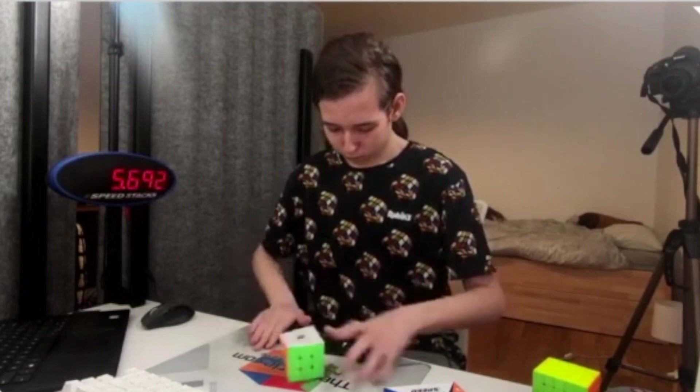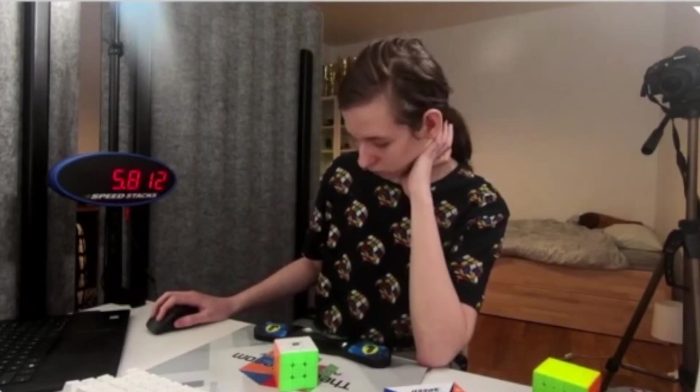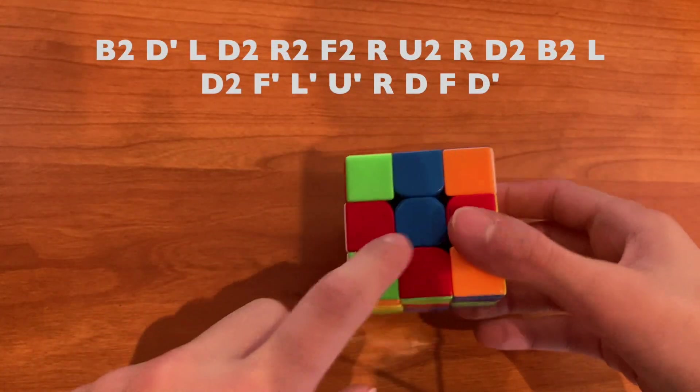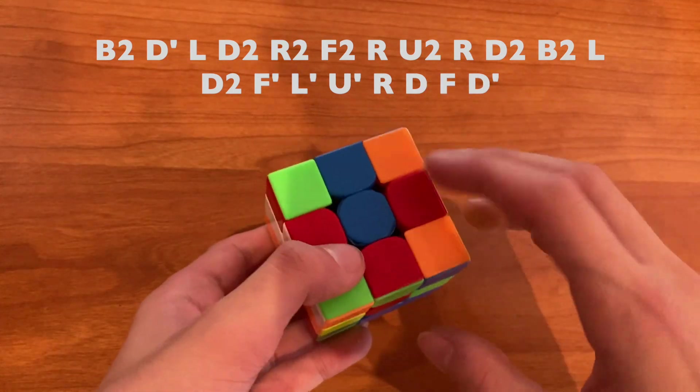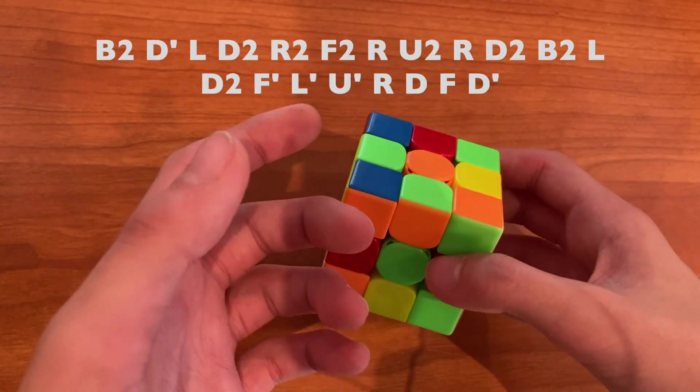5.81. That's world record average. Now for this final solve of 5.81, Timon does red cross. The pieces are here, here, here, and here. And the obvious solution would be to put in these two like this, and then this one, and then insert this one. But as we've learned from this video, Timon is a very intelligent man.